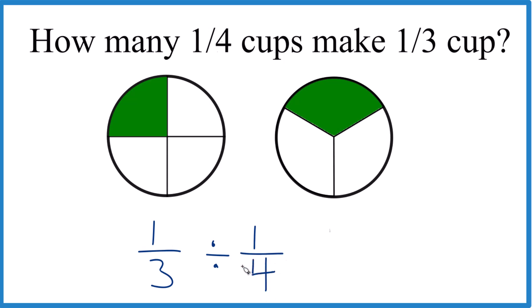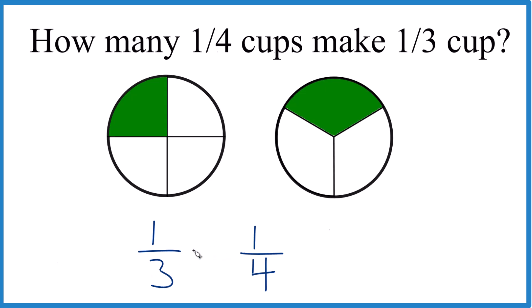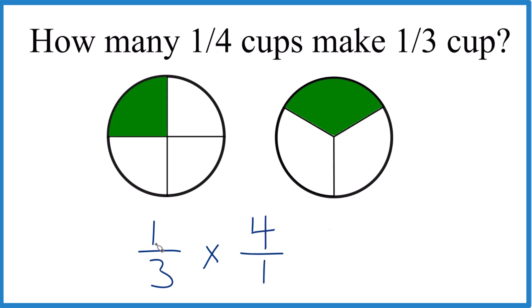And instead of division, what we can do here is we can get rid of our division and actually use multiplication. But we need to multiply by the reciprocal of one-fourth. So we're going to move the one down to the bottom, and the four, we'll move that up where the numerator goes.